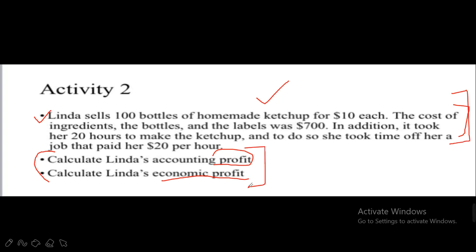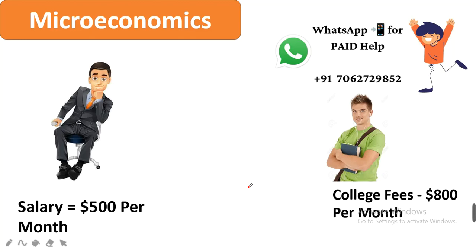Before we calculate accounting profit and economic profit, we need to understand two concepts: explicit cost and implicit cost. I will explain what each of these means.